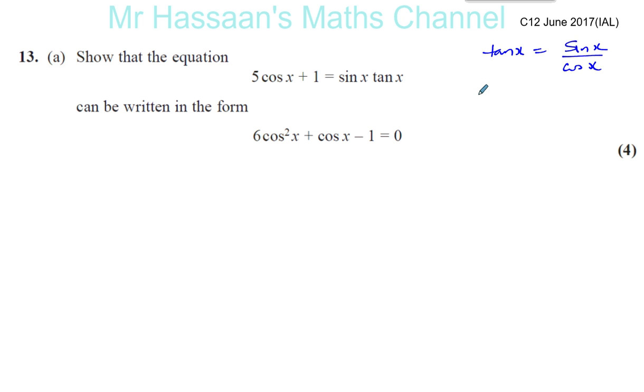And the other main identity we know is that sine squared x plus cosine squared x equals 1. So we can use these two identities to try and change this into that form.